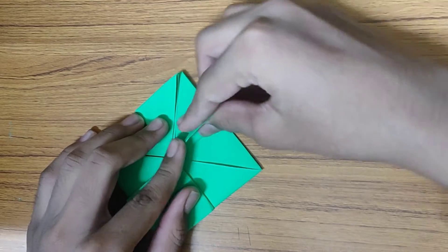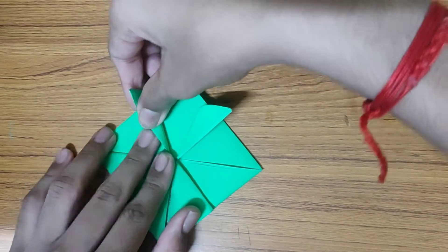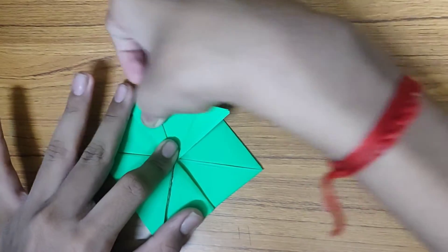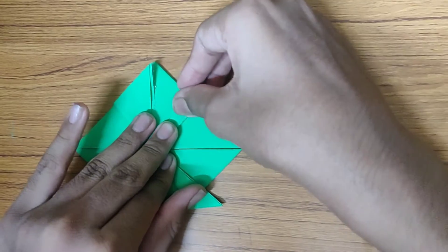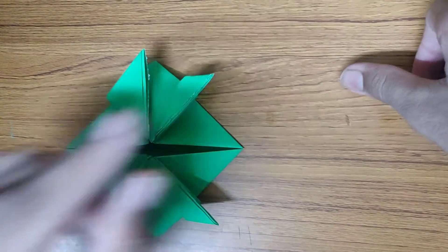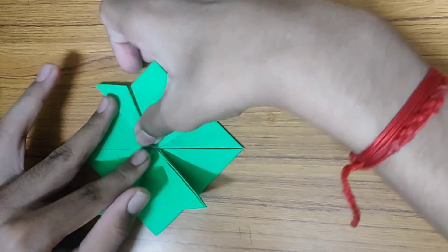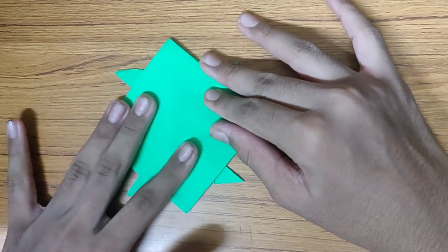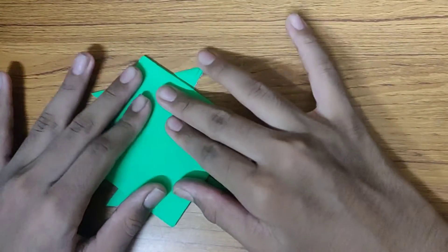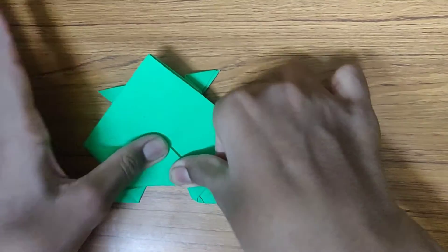So now let's take a flap and fold it like this one. This is going to be the legs of the frog. Now let's take a look. Now let's take a flap and fold it like this, crease it well.